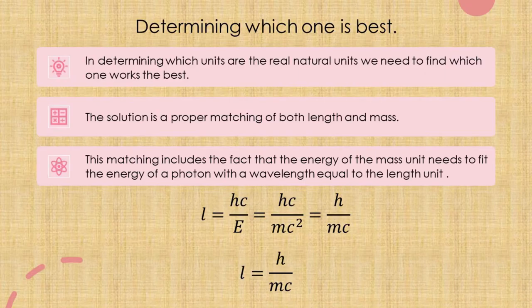At first glance it may look like this eliminates the idea of natural units, but not really. All it shows is that there is more than one way of having these constants end up equal to one — it just depends upon which constants you choose. In determining which units are the real natural units, we need to find which one works the best.